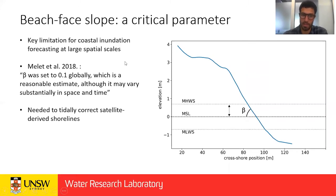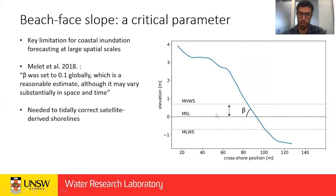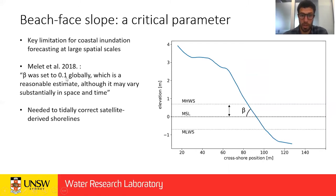This is a very important parameter in a number of coastal engineering formulations, for example coastal inundation or run-up equations. Often it's a limitation because we don't have this parameter at large spatial scales. When doing global inundation studies, studies often either use slope-independent run-up equations or assume a constant value — in this example, Melet et al. 2018 use 0.1.